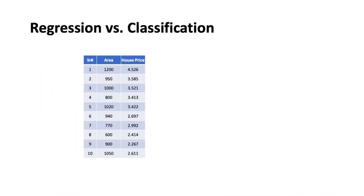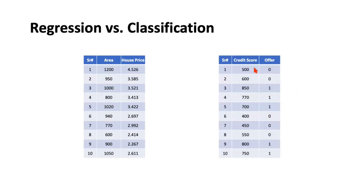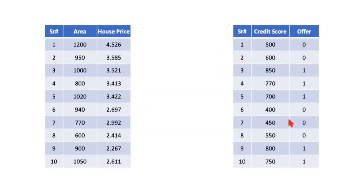We've seen this kind of data so far — given a variable like area of the property, we're predicting the price of the house. But what if the data was a little different? For example, let's say you were trying to help a bank figure out who are the customers who would like to go for a long-term deposit, based on the credit score of the customers. The prediction is no longer a value like the house price — it's a class. Zero represents people who would potentially not go for a term deposit, and one represents the ideal targets for term deposit.